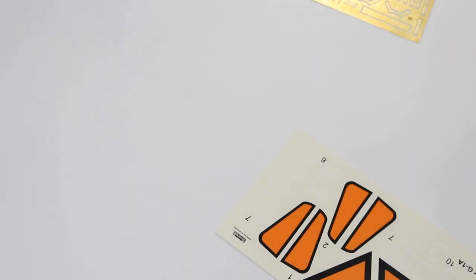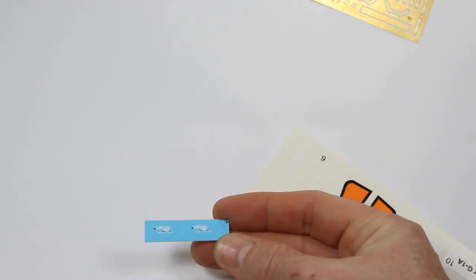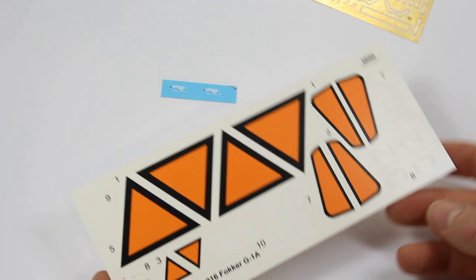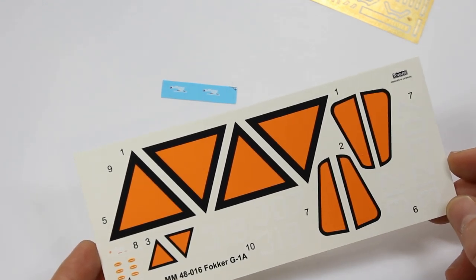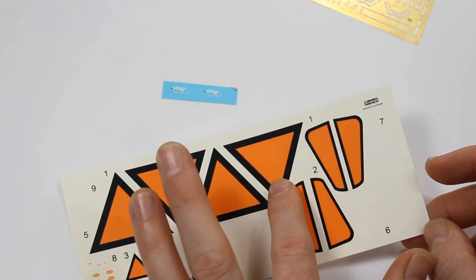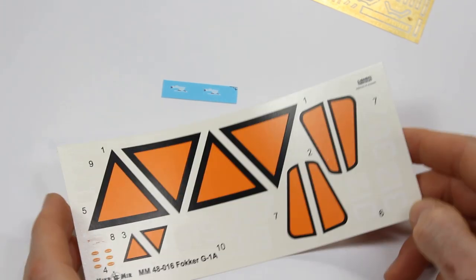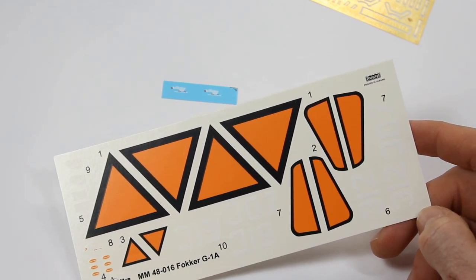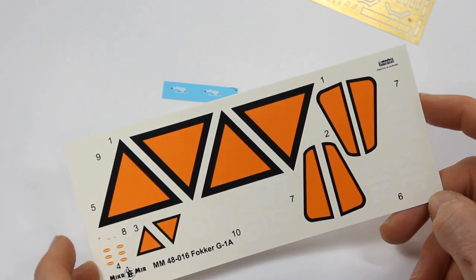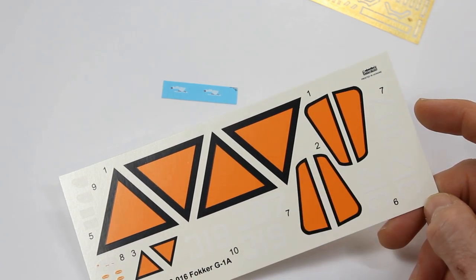Then the decals—looks like a duck or goose symbol there lying down horizontal. This says printed in Ukraine by Decograph, which is probably in-house by the looks of it. Everything looks very good. It's quite raised—could be for numerous reasons—but you can see the carrier film, so it might be a little bit thick. I don't know how that will affect them going down, but all in all the register's very good.